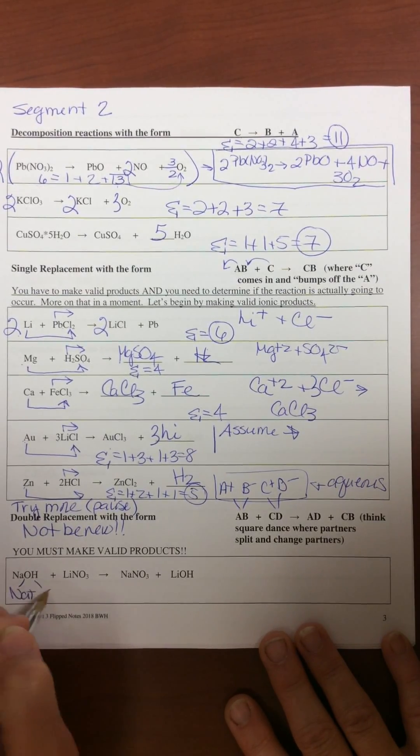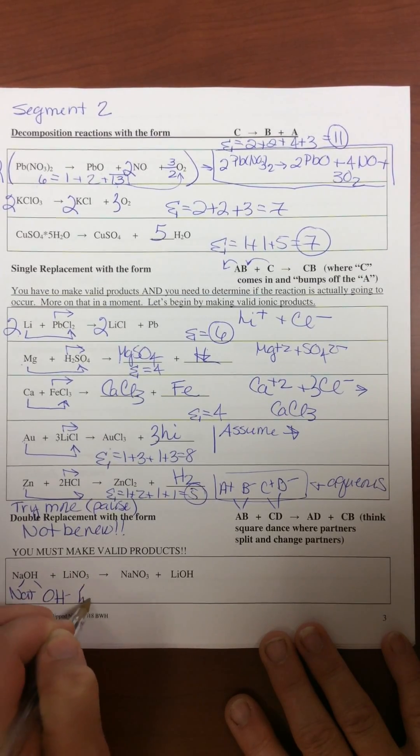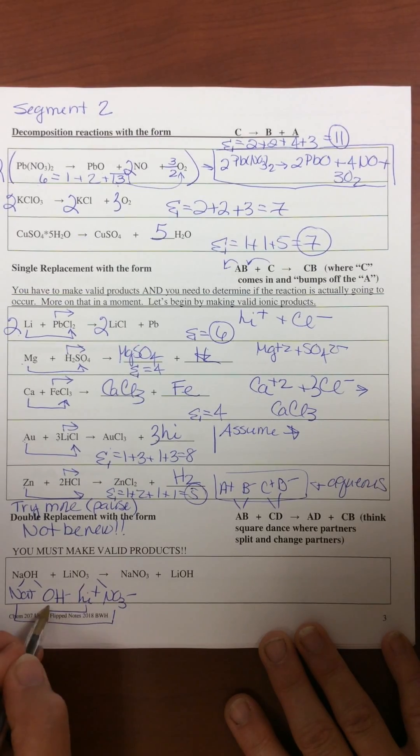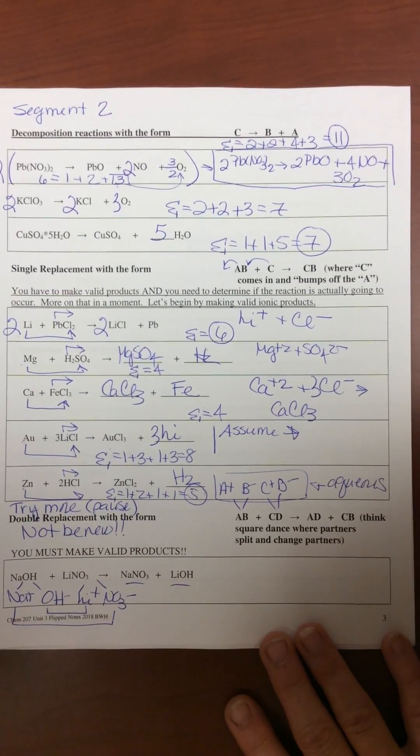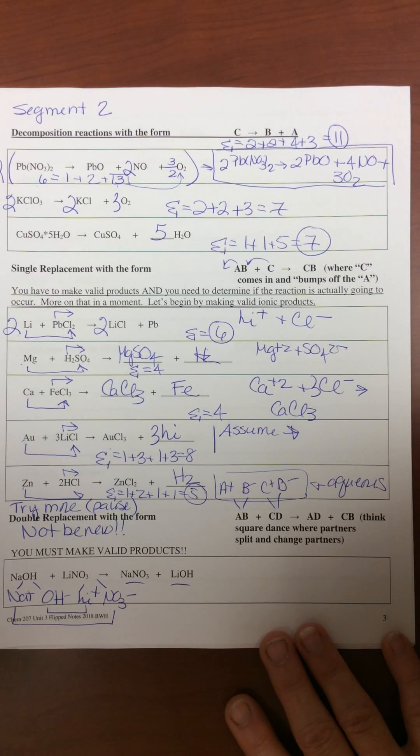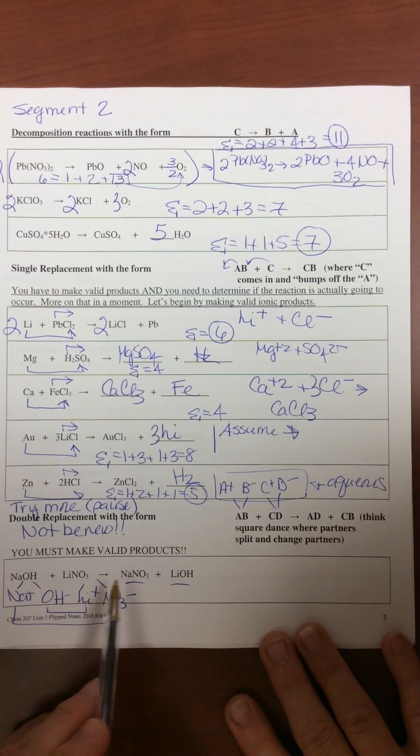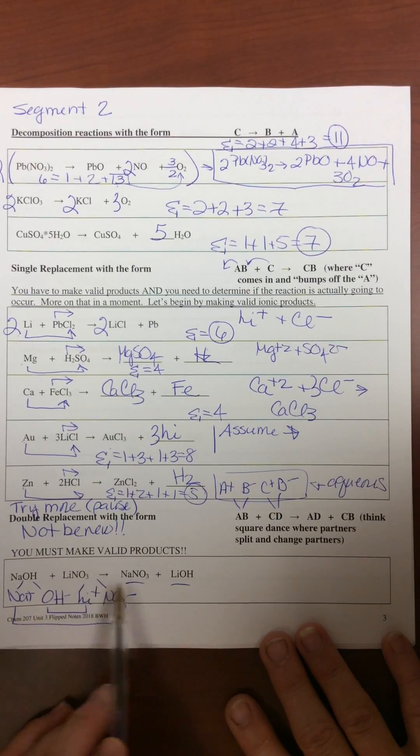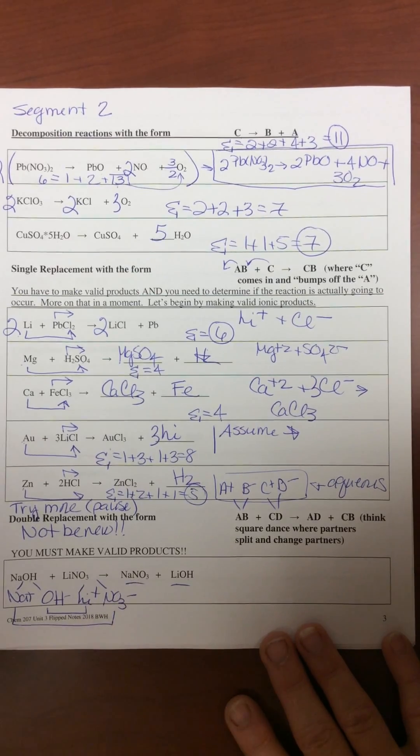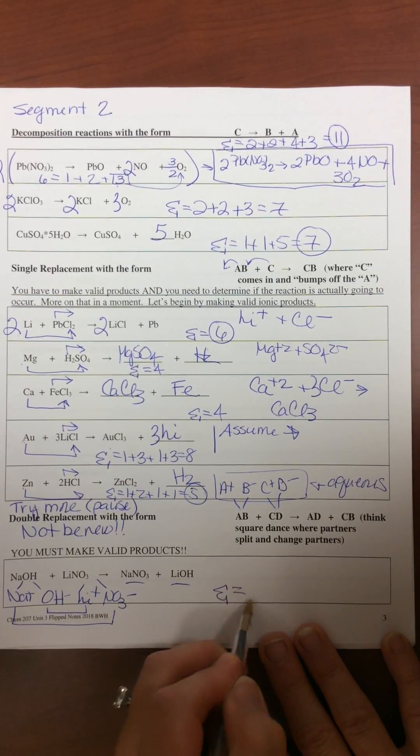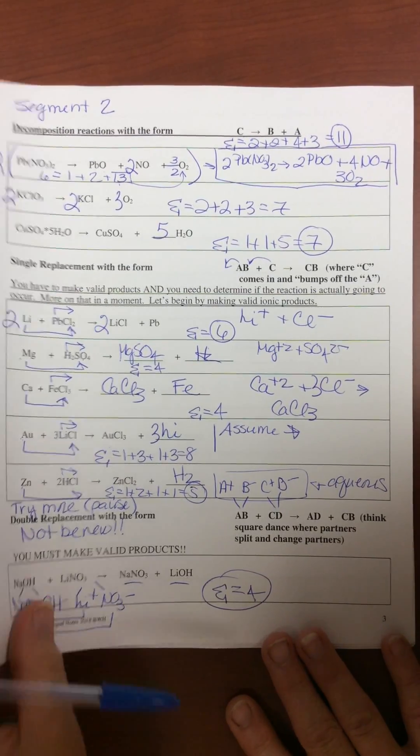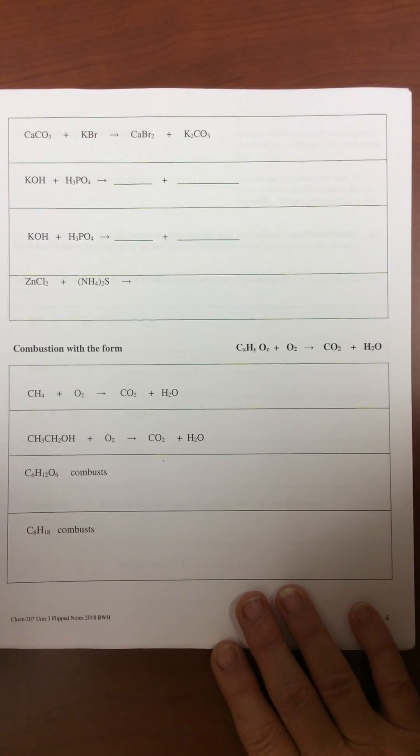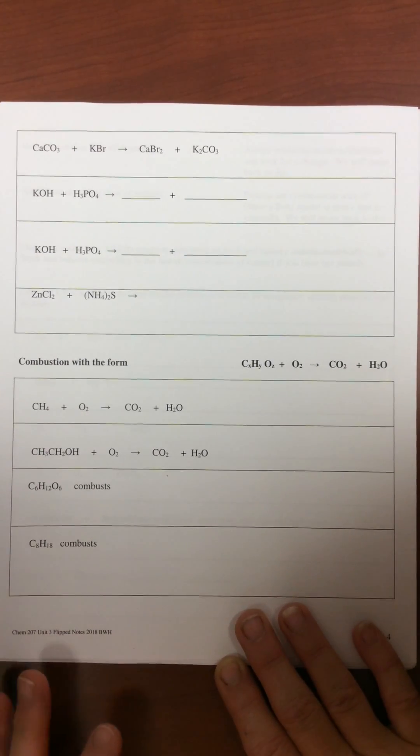Na plus, OH minus, Li plus, NO3 minus. These two pair, these two pair, and that's how you get these two products. Think in groups, one sodium, one sodium, one hydroxide, one hydroxide, one lithium, one lithium, one nitrate, one nitrate. And your sum is going to be equal to four.